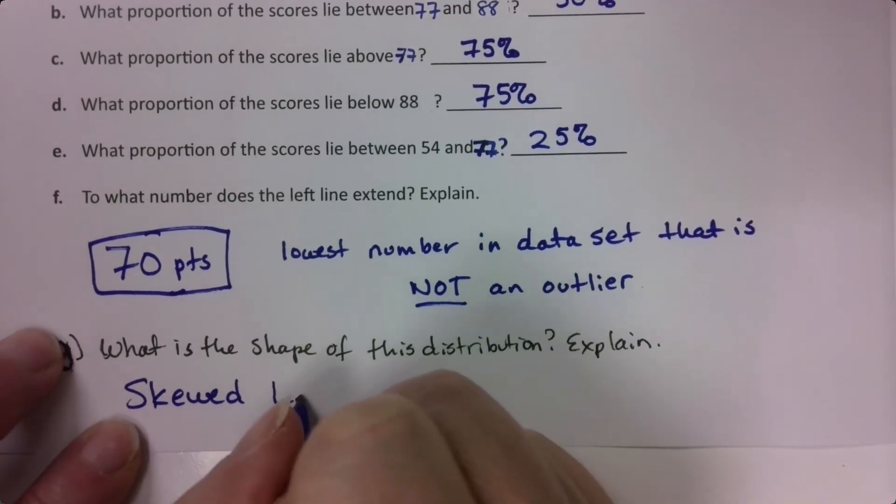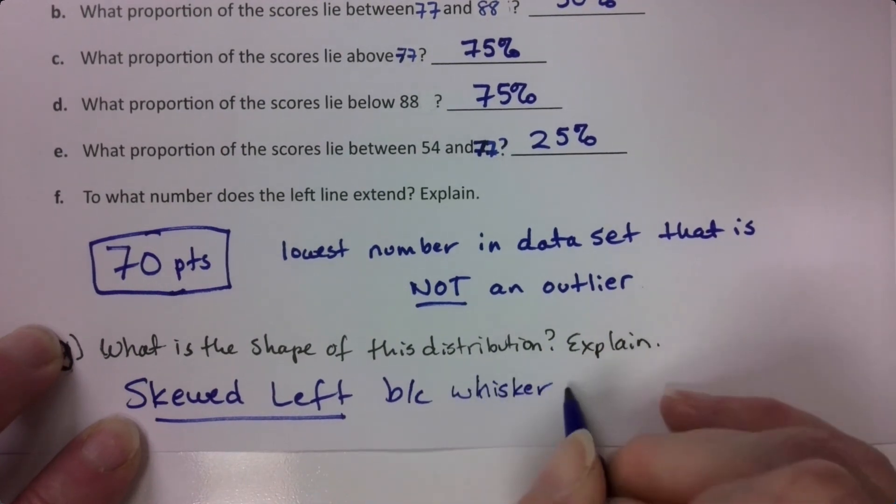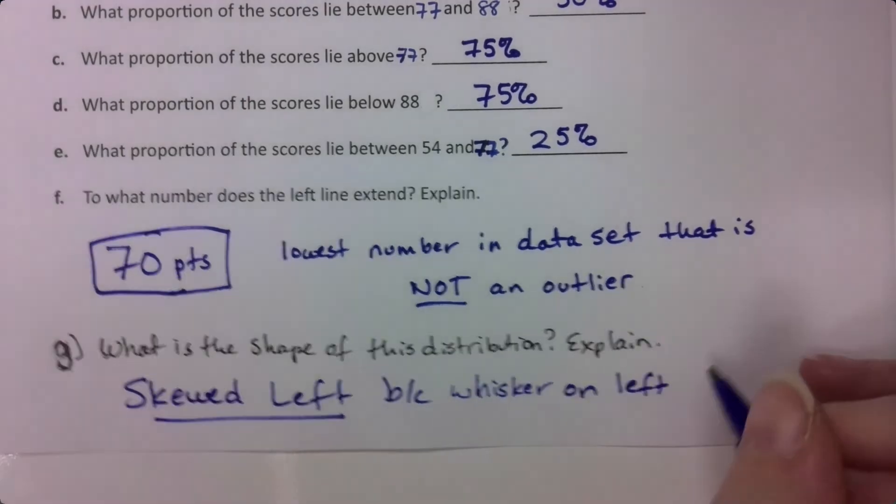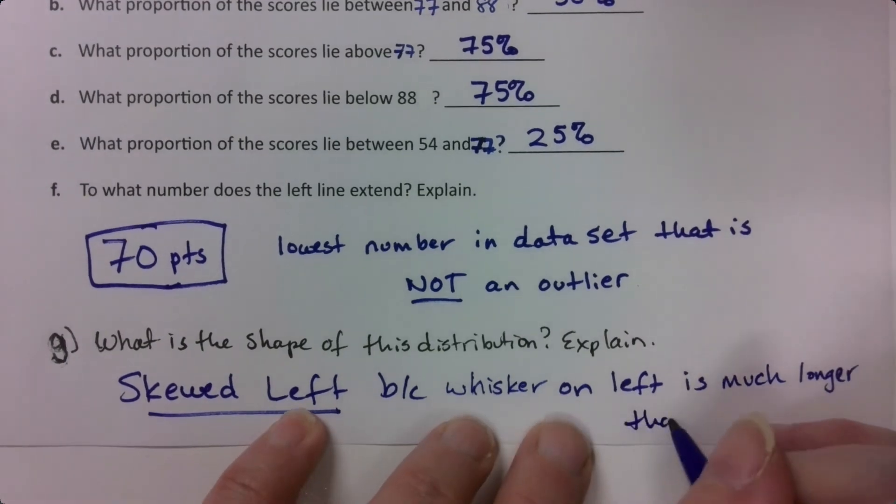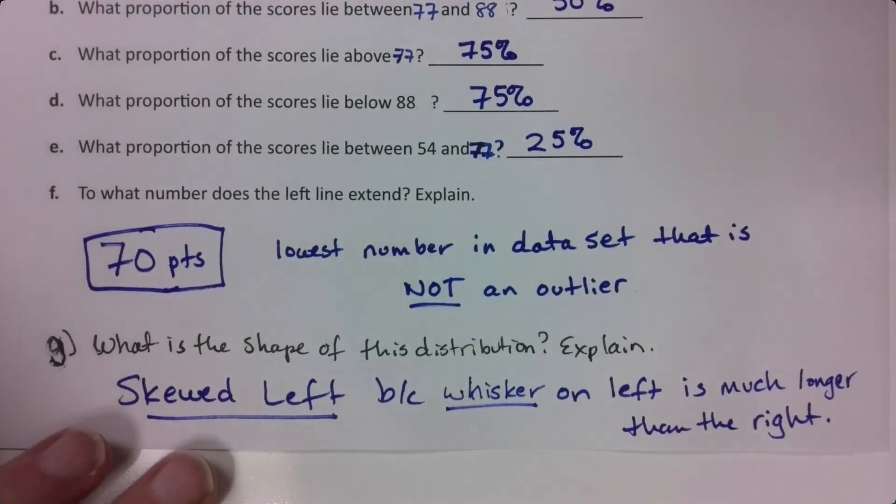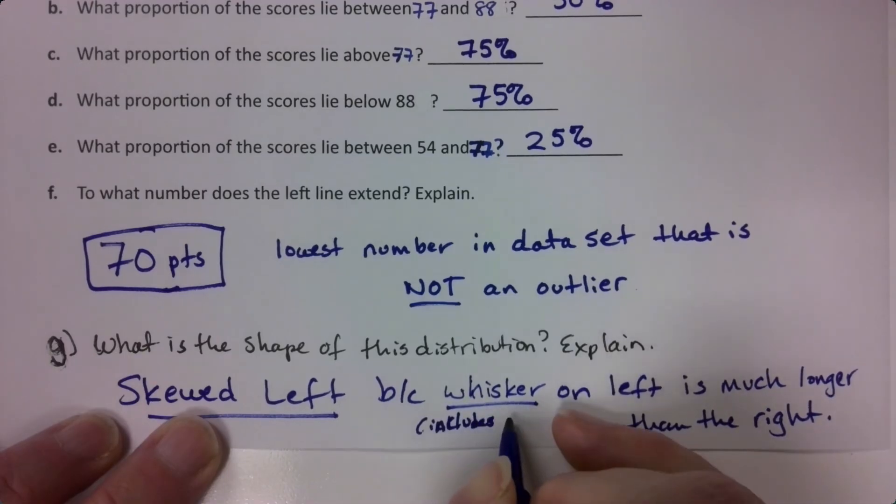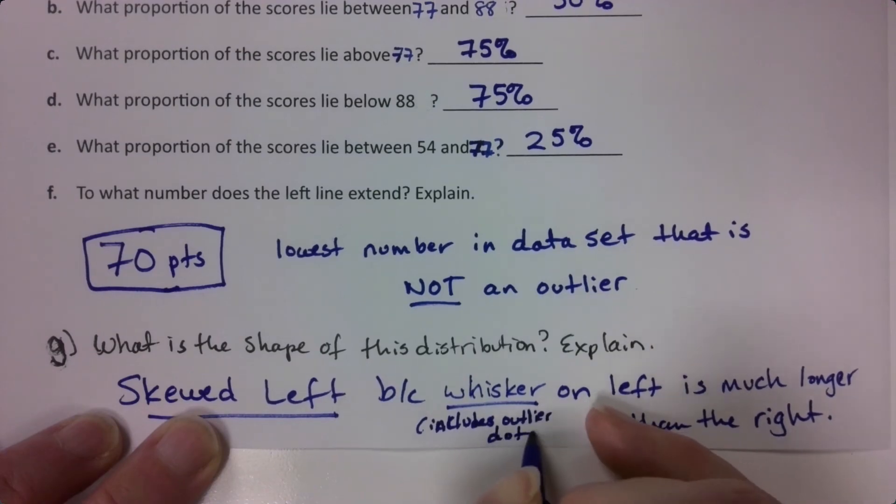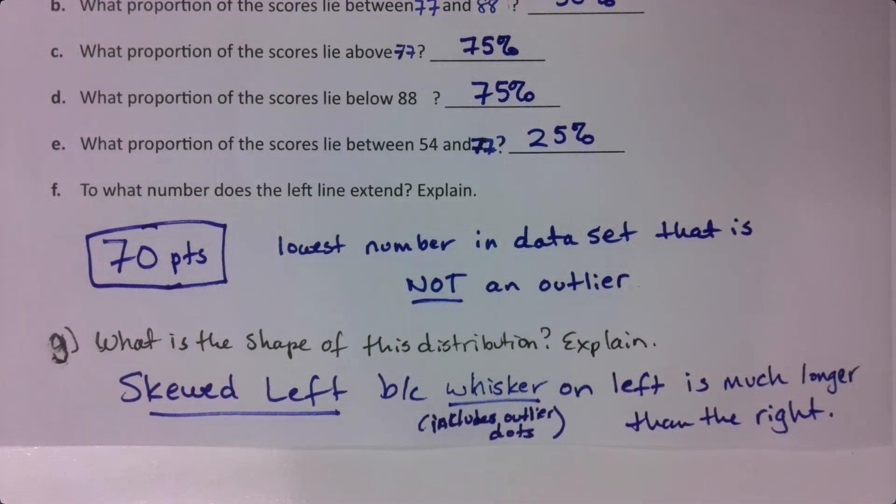So I'm going to say skewed left because the whisker on the left is much longer than the right. I also want you to remember and note that that whisker includes the dots—includes the outlier dots. They're part of it. So of course it's skewed left, it has low outliers. If it has outliers on the left, it's going to be skewed left. And the box plot shows us that with its lovely picture there.